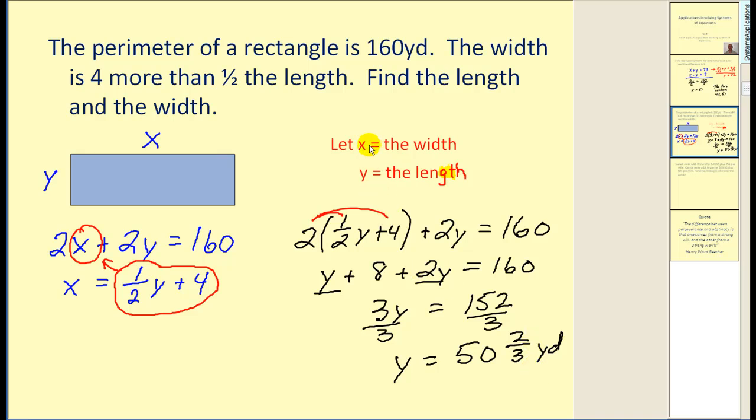Now we're not done. We still have to find x. But over here we have an equation that relates x to y. So let's go ahead and use this. x is equal to one-half times y plus 4. Since this is in fraction form, I'm going to go ahead and use the fraction form of y or 152-thirds.